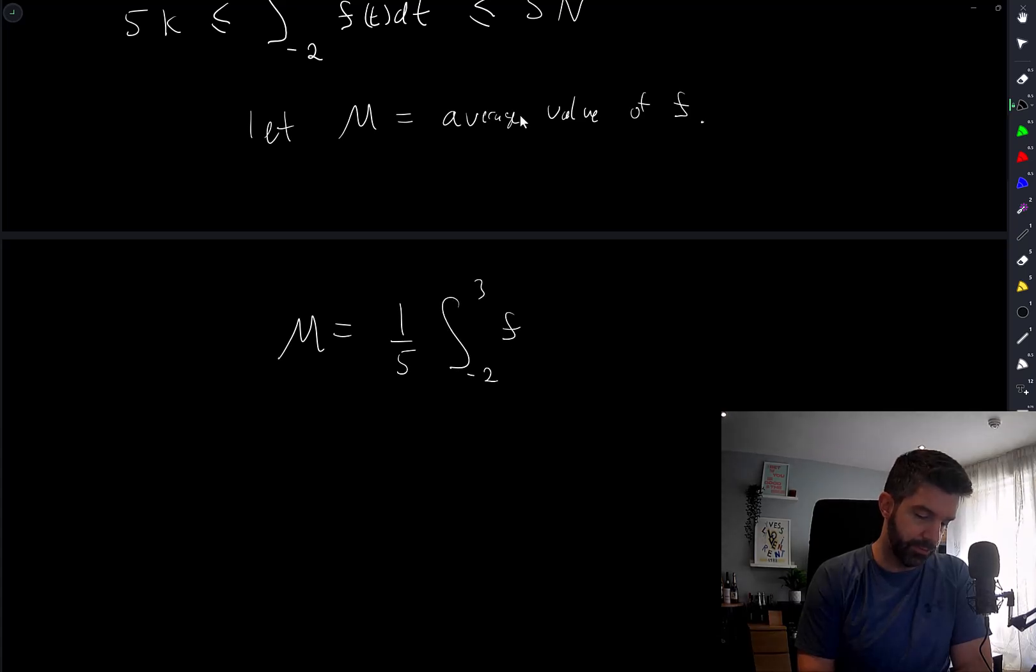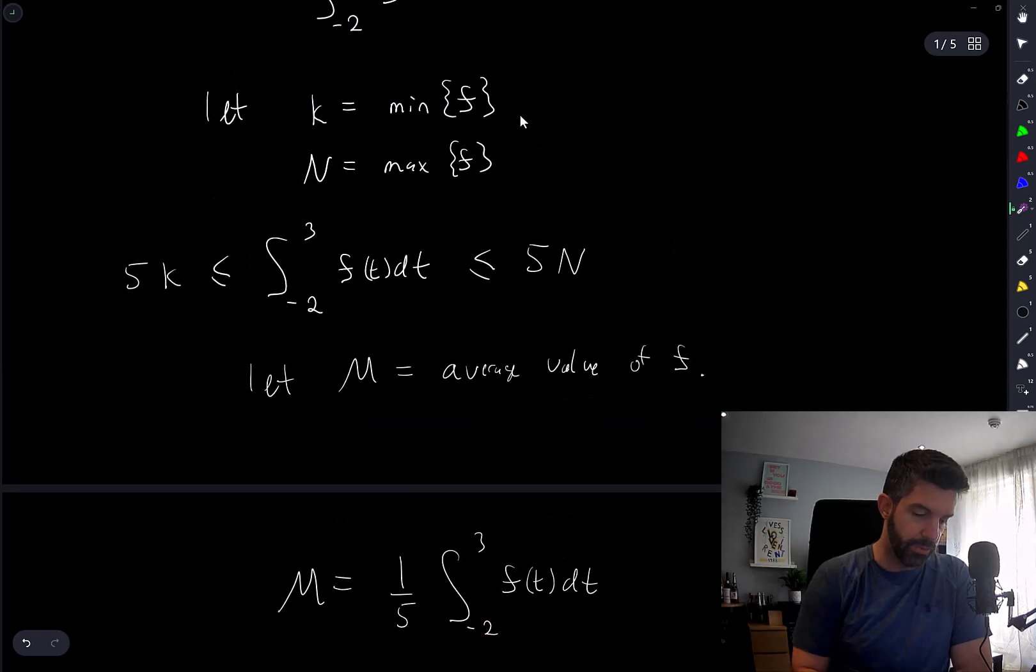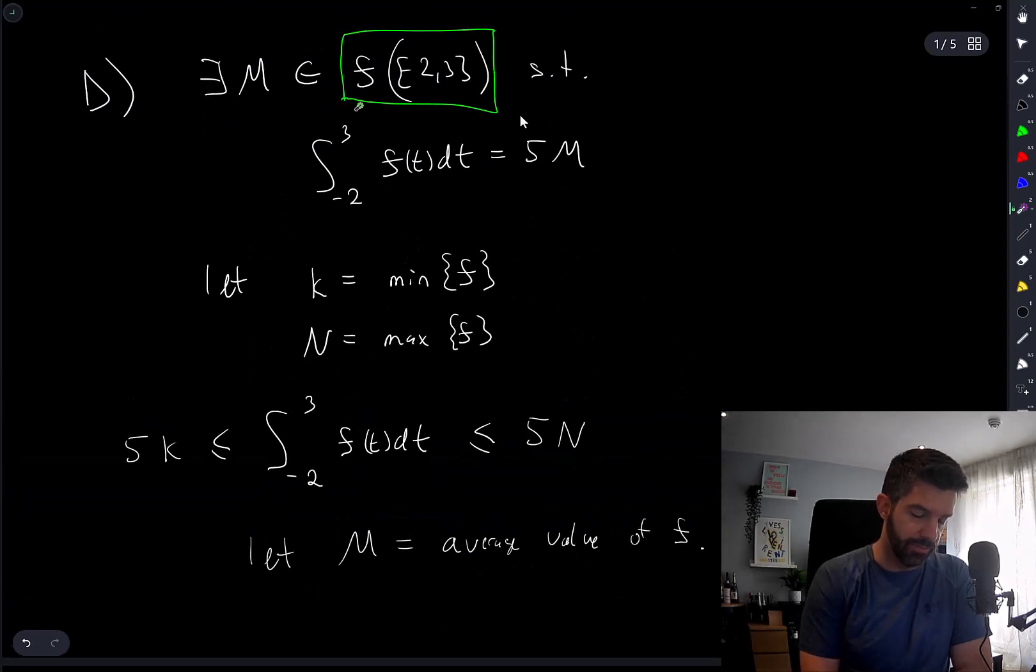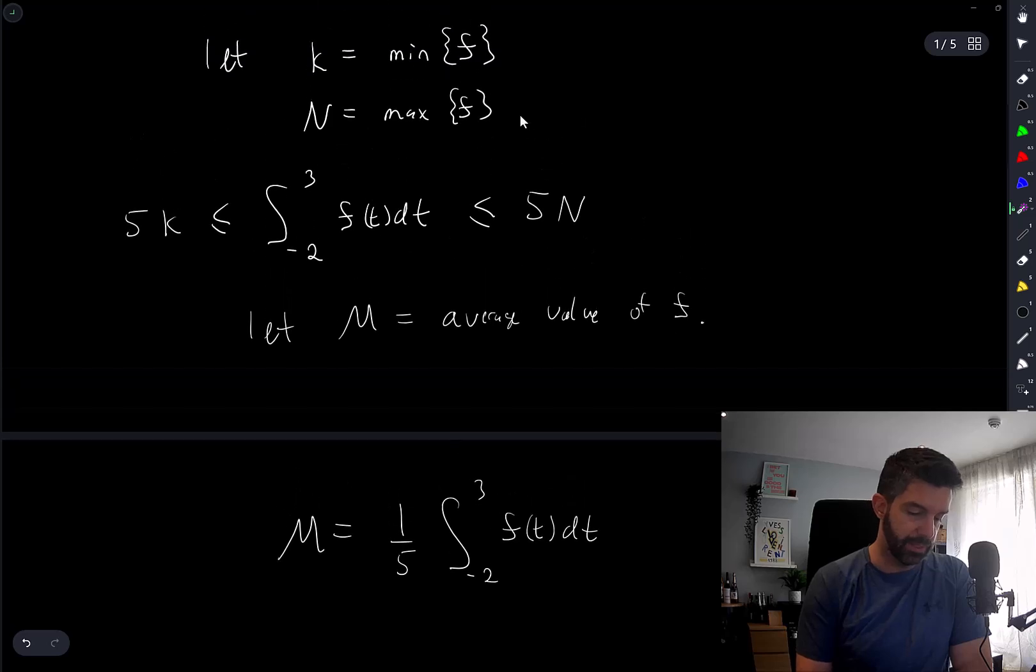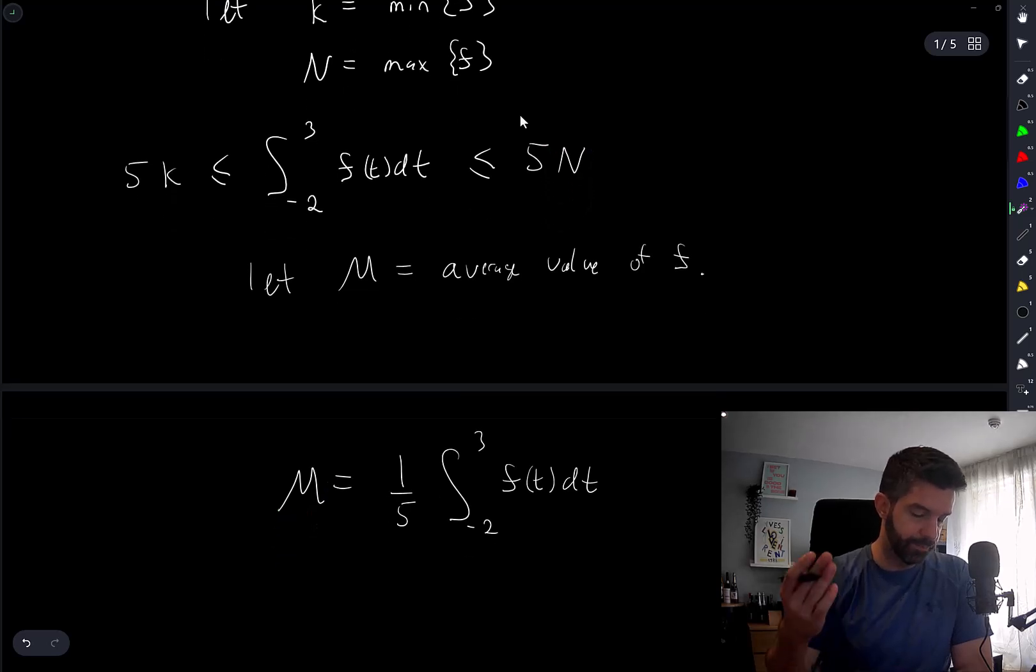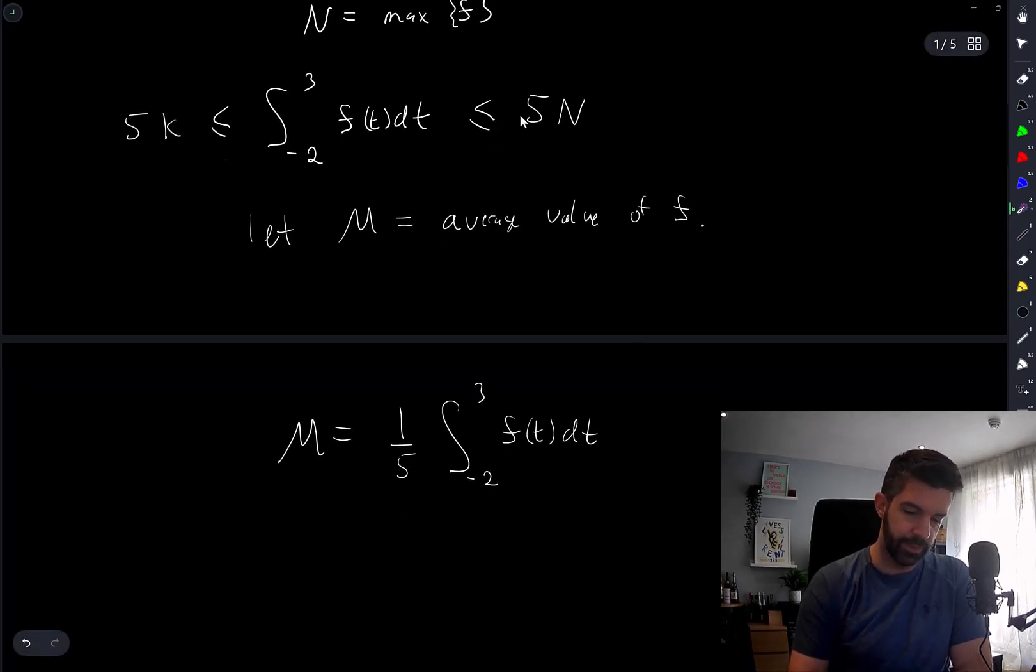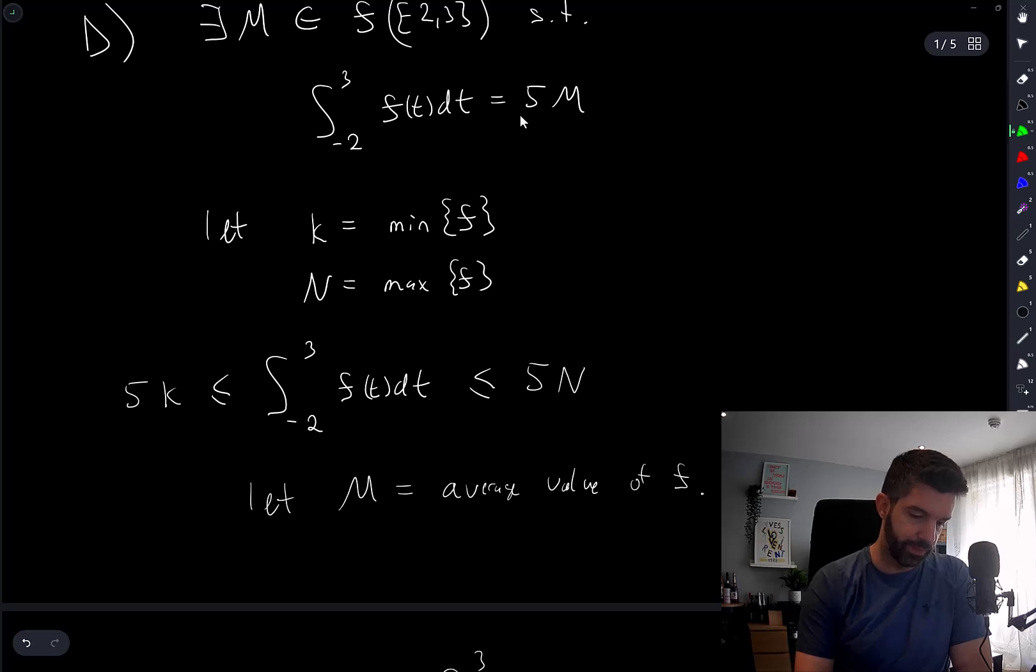It's really just a question of whether, when you write m like this, as that integral, whether that number is in the range of f. And it will be, because it has to be between the minimum and the maximum, this number. And one of the earlier options, option C, basically says that any number between the minimum and maximum of the function is attained by the function. Okay, so this one is true, option D.